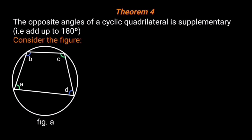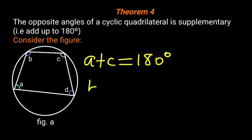Circle geometry, Theorem 4: The opposite angles of a cyclic quadrilateral are supplementary, that is they add up to 180 degrees. In the figure, A plus C is equal to 180 degrees, and B plus D is equal to 180 degrees.